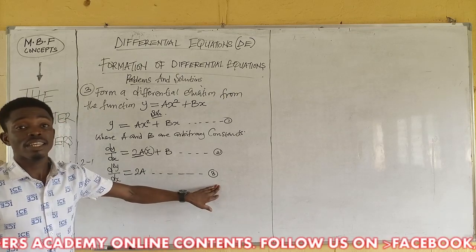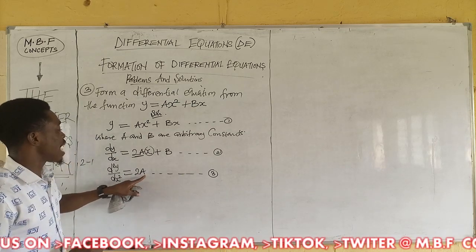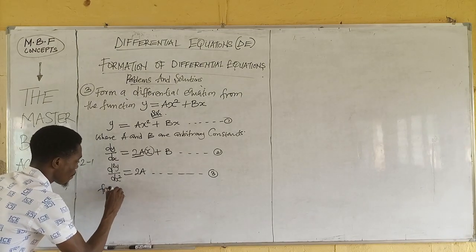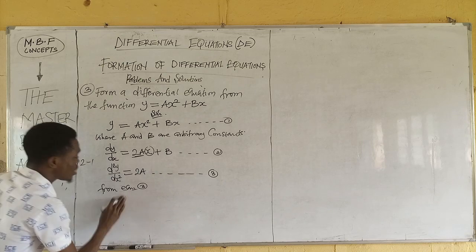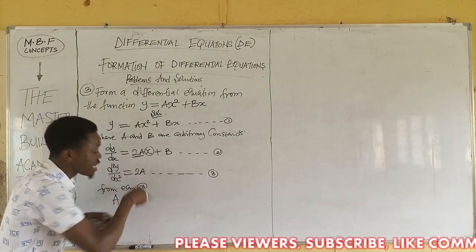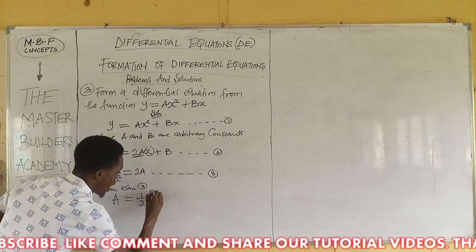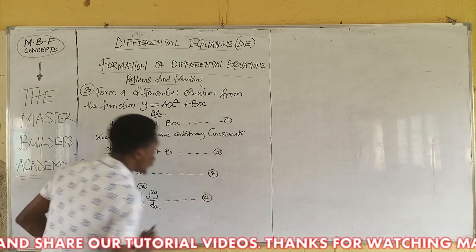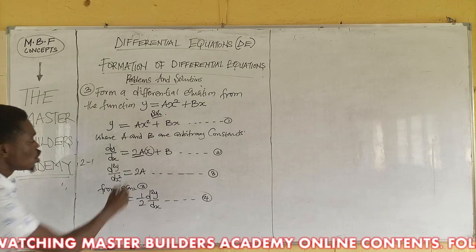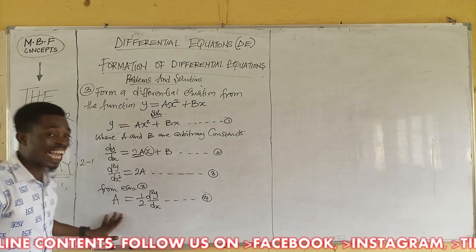From equation three, we now have only one arbitrary constant, so we can make a the subject of formula. We divide both sides of equation three by 2, giving a equals (1/2)(d²y/dx²). This gives us equation four. Now we have made a the subject of formula. To get the actual differential equation, we must eliminate both a and b by making each the subject of formula.